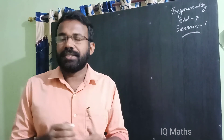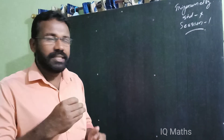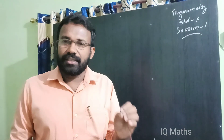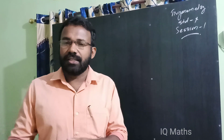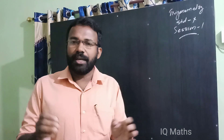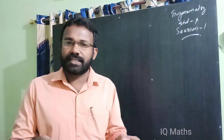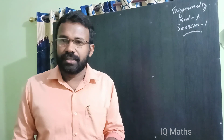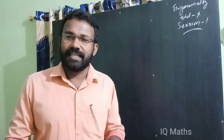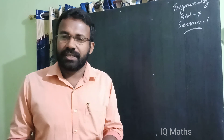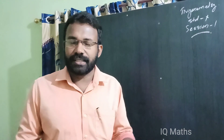What is Trigonometry? Trigonometry is derived from three words: Tri, Gon, and Metron. It is a branch of mathematics. Tri means three, Gon means sides, Metron means measurement. So Trigonometry is about the measurement of three sides.